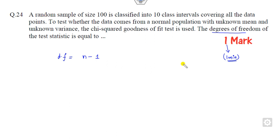Look at that: a random sample of size 100 is classified into 10 class sub-intervals. This is one class, this is second class, and so on. So n is my 10. So degree of freedom will be...